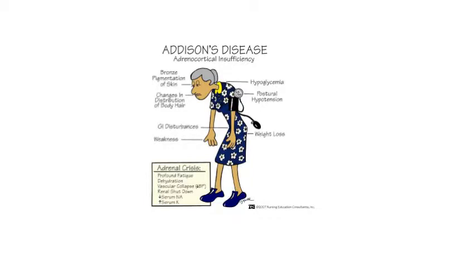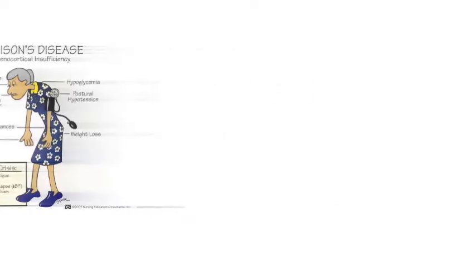buccal mucosa, vermilion border of the lips, and around scars and nipples. It is not a feature of secondary adrenal insufficiency because of the lack of increased ACTH in these patients.